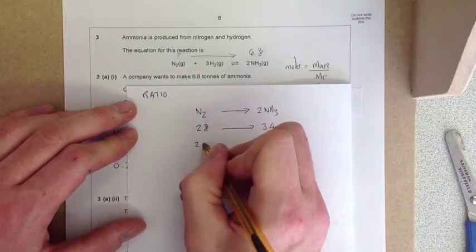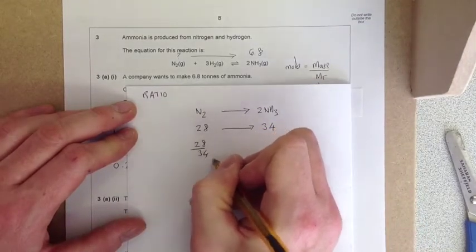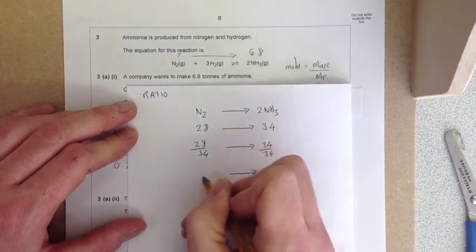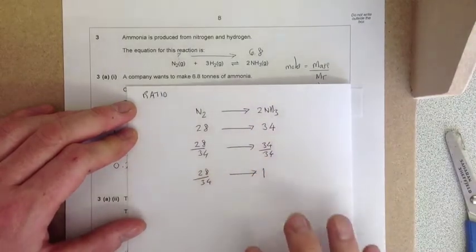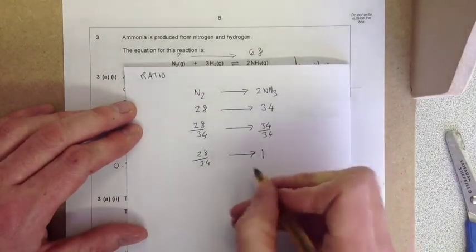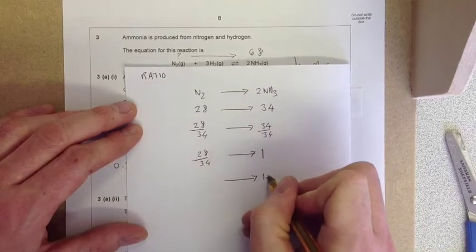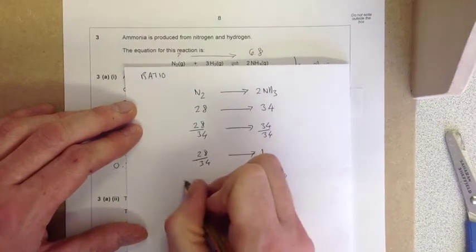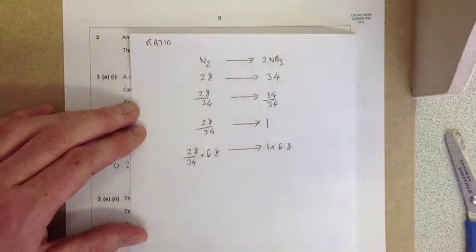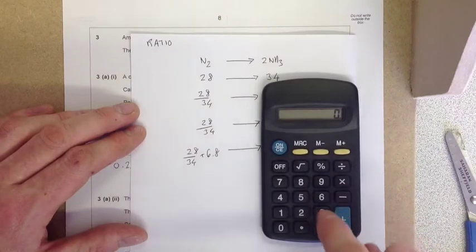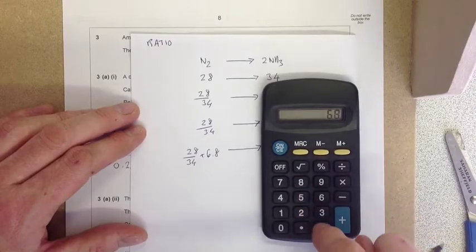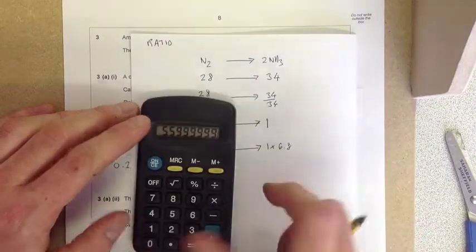If we divide both sides by 34, we want to work out how much mass of nitrogen produces 6.8 tons of ammonia. So if I multiply both sides by 6.8, I get 28 over 34 times 6.8, which equals 5.6 tons.